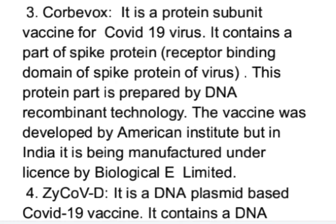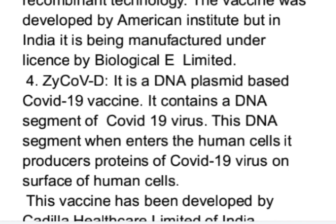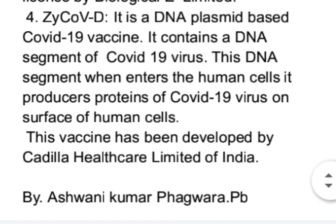The Corbevax vaccine was developed by an American institute but in India it is being manufactured under license by Biological E Limited. Next is ZyCoV-D — it is a DNA plasmid-based COVID-19 vaccine. It contains a DNA segment of the COVID-19 virus. When this DNA segment enters human cells, it produces proteins of the COVID-19 virus on the surface of human cells. This vaccine has been developed by Cadila Healthcare Limited of India. These are the different types of vaccines and the different approaches adopted for making them.